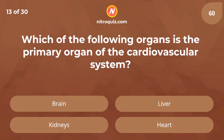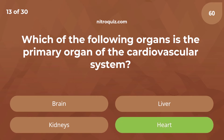Which of the following organs is the primary organ of the cardiovascular system? Answer is the heart.